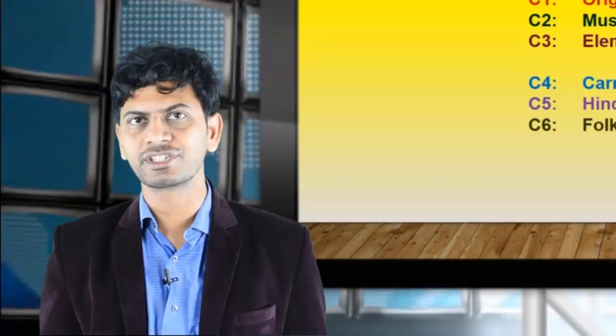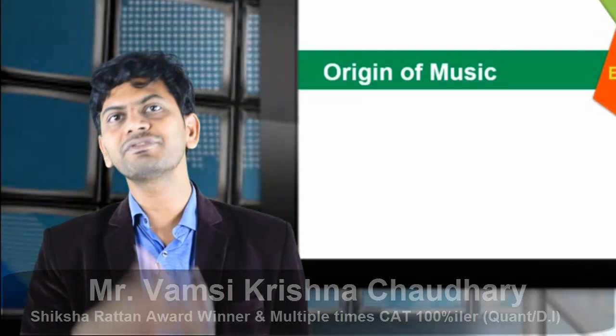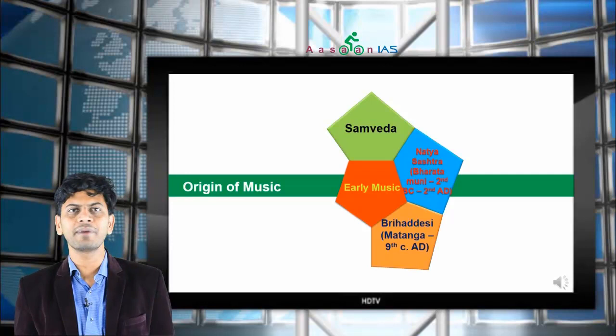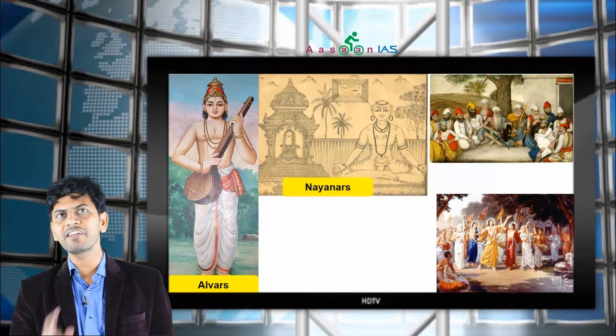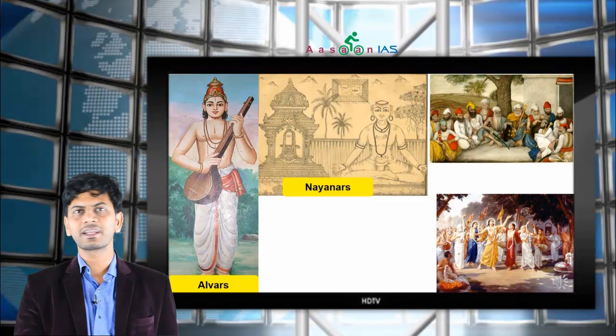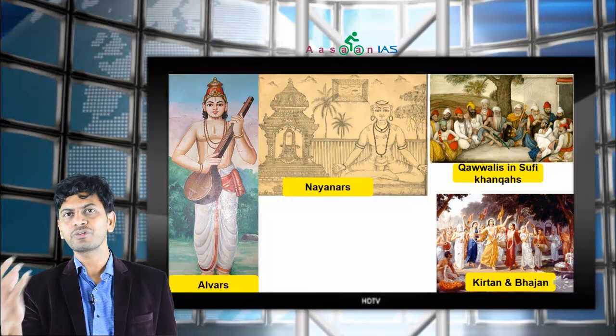Before continuing, let me summarize what we have seen in the previous two videos. First, we have seen the origin of music. Samveda was the earliest text which talked about music. Then Natya Shastra written by Bharatamuni, Brihaddeshi written by Matanga, Gita Govinda written by Jayadeva, and Sangeet Ratnakar by Sarangadeva. Then Nainars and Alvars — Shaivites are Nainars, Vaishnavites are Alvars — who contributed through poems and kirtans. Similarly, qawwalis were sung by Sufi saints in their khanqahs.